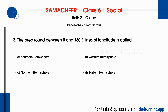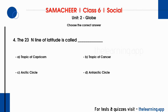Question 3: The area found between 0 and 180E lines of longitude is called. Options are A. Southern Hemisphere, B. Western Hemisphere, C. Northern Hemisphere, D. Eastern Hemisphere. Correct answer is D. Eastern Hemisphere.